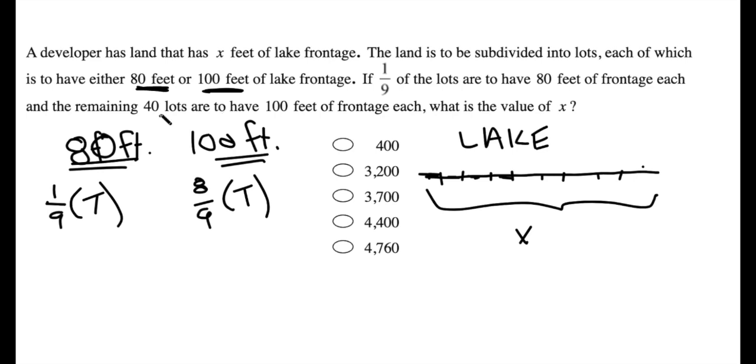But then the problem tells us how many 100-foot lots there are, right? The problem says the remaining 40 lots have 100 feet of frontage. Great. So we know that this number, whatever it is, eight-ninths of t, is equal to 40.